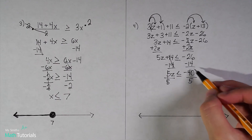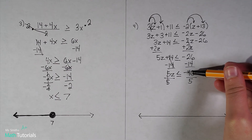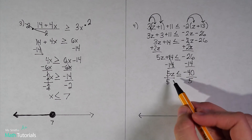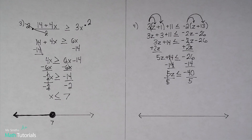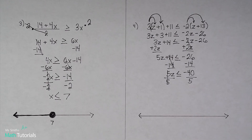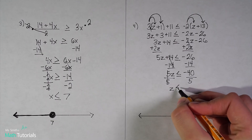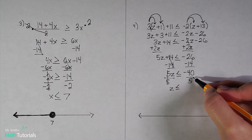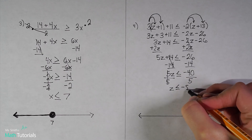I want z's on the left and constants on the right, so I add 2z to both sides. 3z plus 2z is 5z, leaving 5z plus 14 is less than or equal to negative 26. Now I move the 14 over — subtracting 14 from both sides — giving me 5z is less than or equal to negative 26 minus 14, which is negative 40. My last step is to divide by 5. Some students see the negative 40 and think they should flip the sign — remember, it's only the number on the bottom we worry about. Since it's positive 5, the sign stays the same: less than or equal to. Negative 40 divided by 5 is negative 8.